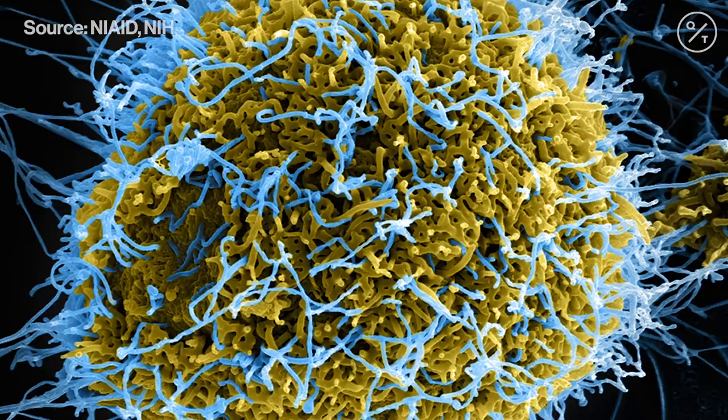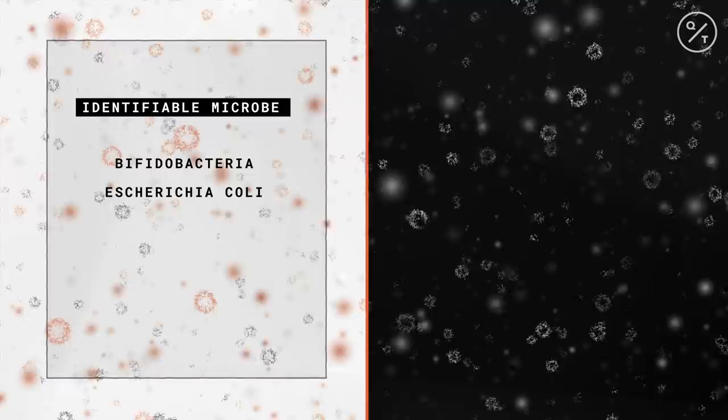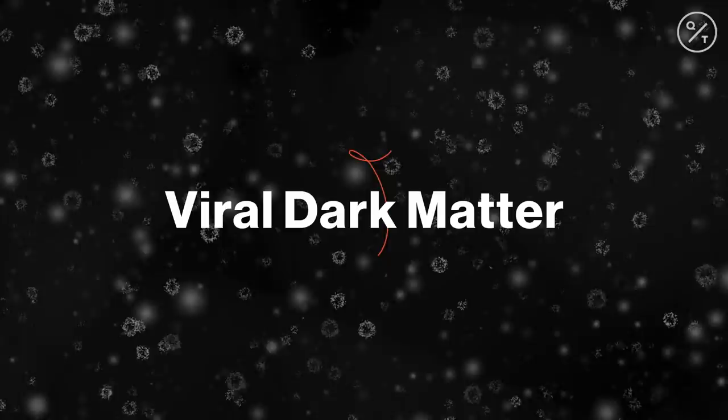There's an enormous amount of unidentified microorganisms living within animals, plants, and even our own bodies. Take the human gut for example — only about 50% of the microbes are identifiable. The other 50% don't match anything that we know about, and a substantial fraction of that is what we would call viral dark matter.